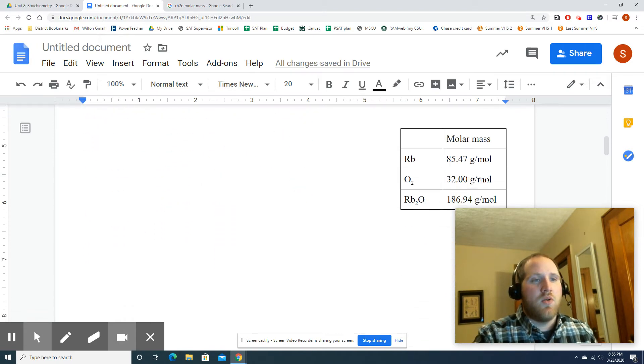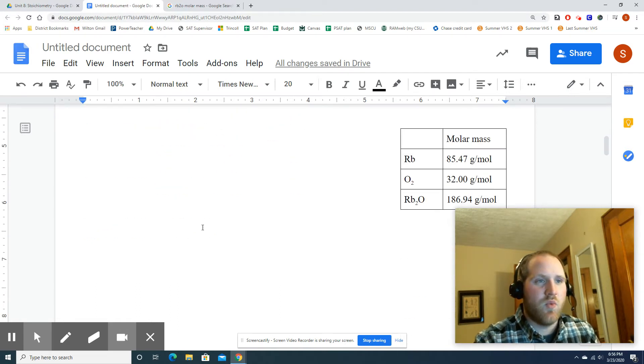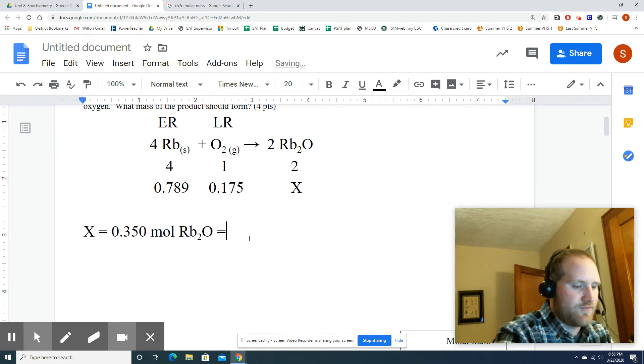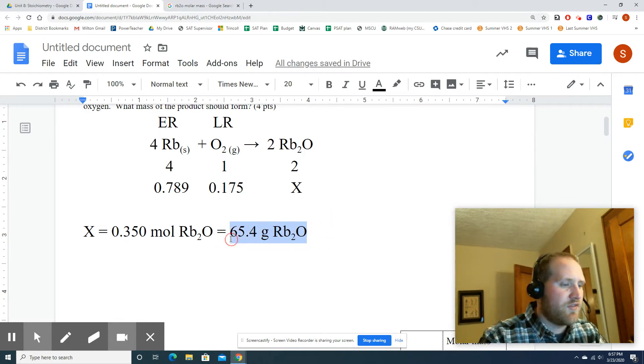So you do Rb2O, 186.94, and we're going to now multiply that. 0.350 times 186.94. And with three sig figs, 65.4 grams of Rb2O. Make sure if you're typing up your work, you use subscripts properly, superscripts properly. If you're using a Google Doc to either control or command comma, so control comma or command comma, that's how you do a subscript. For superscript, it's period instead of comma.